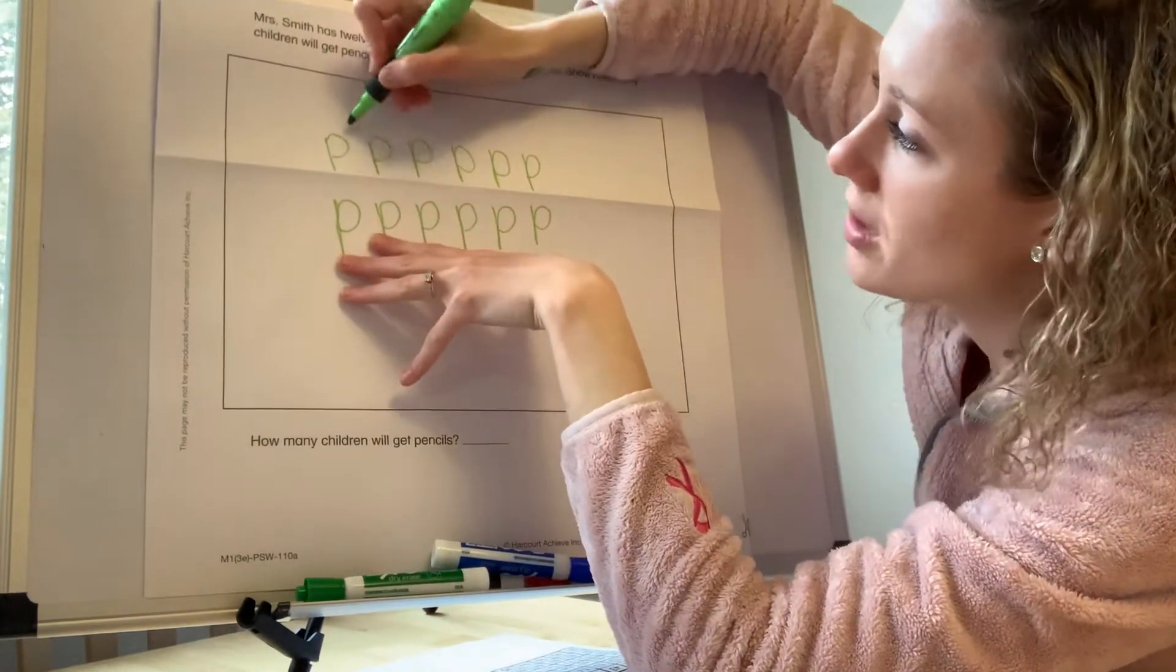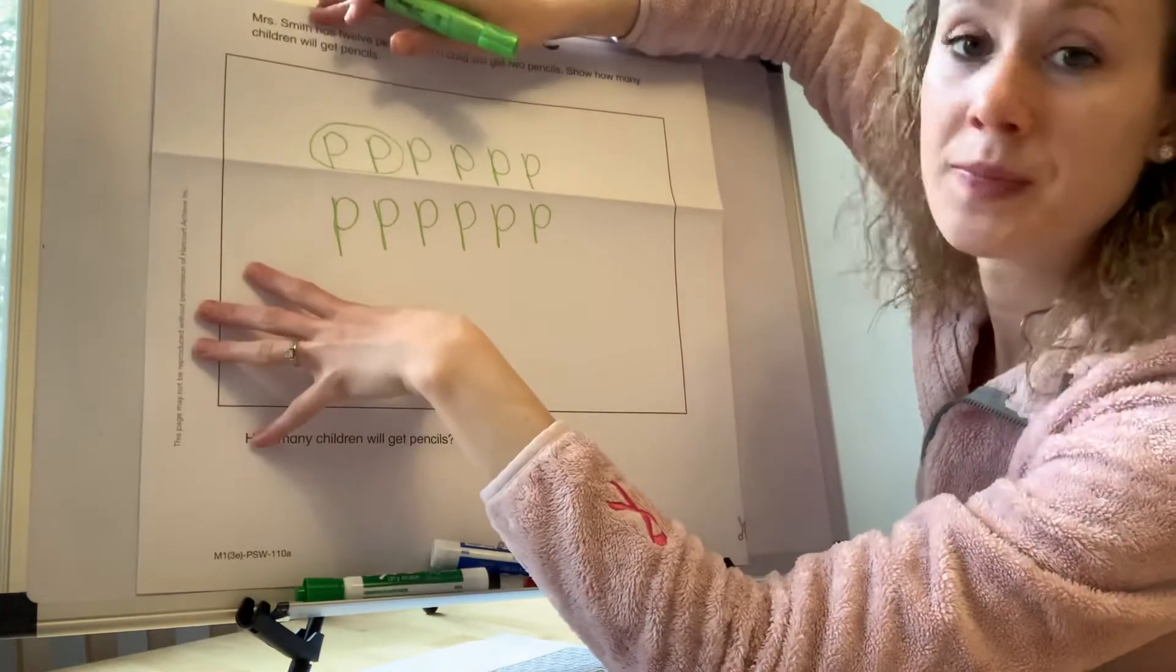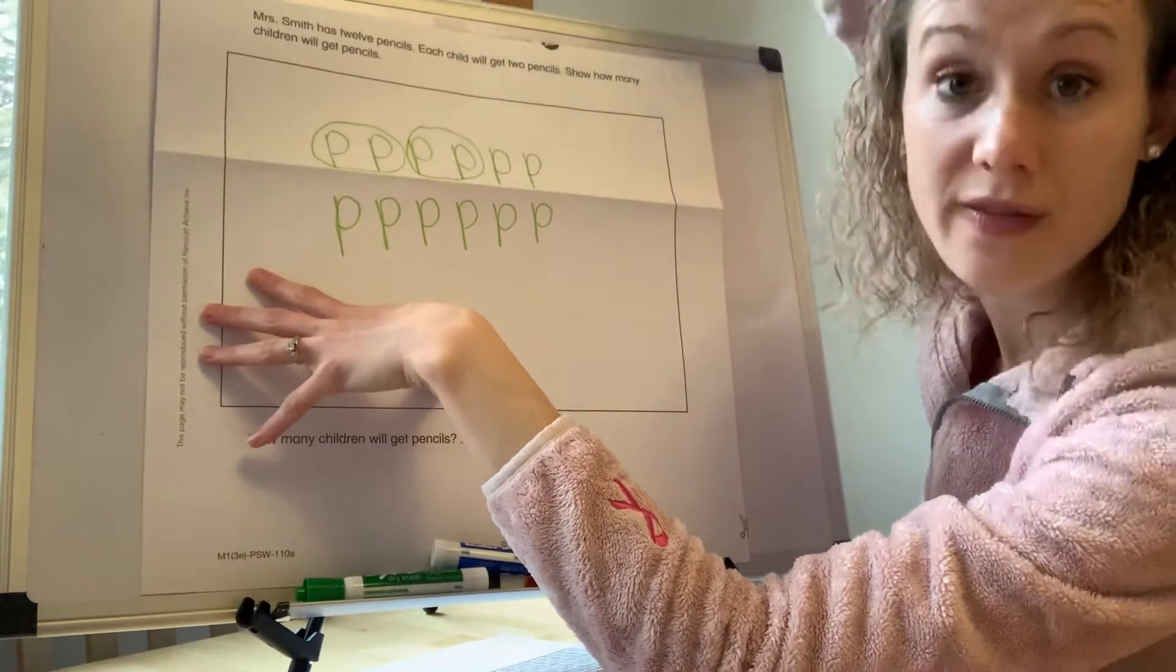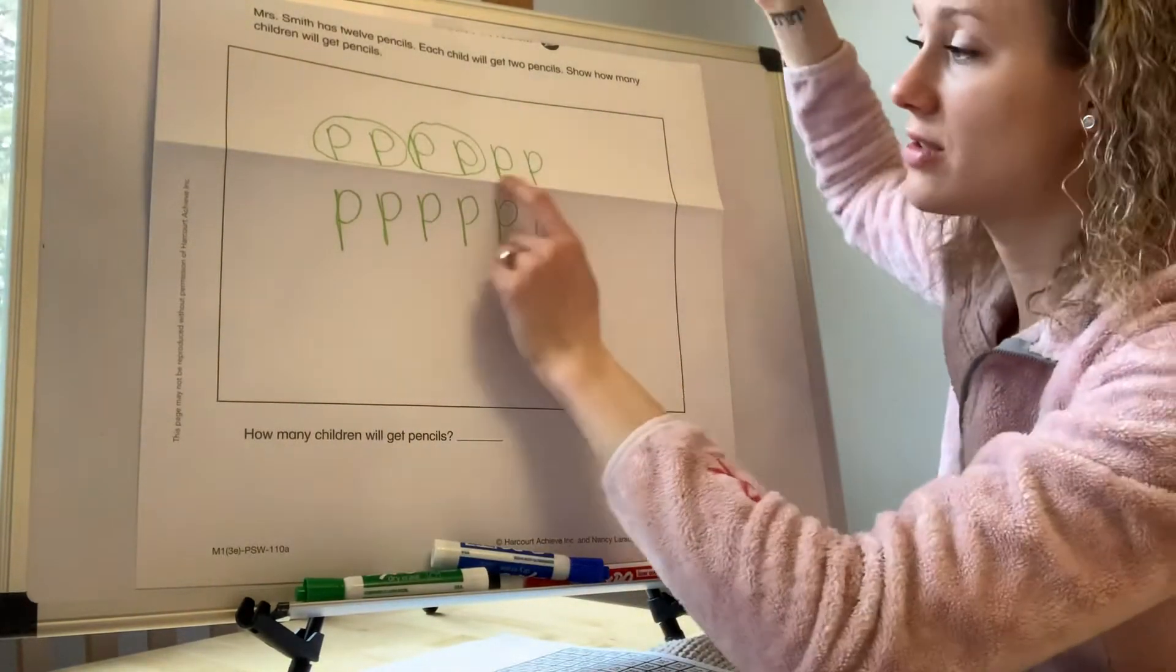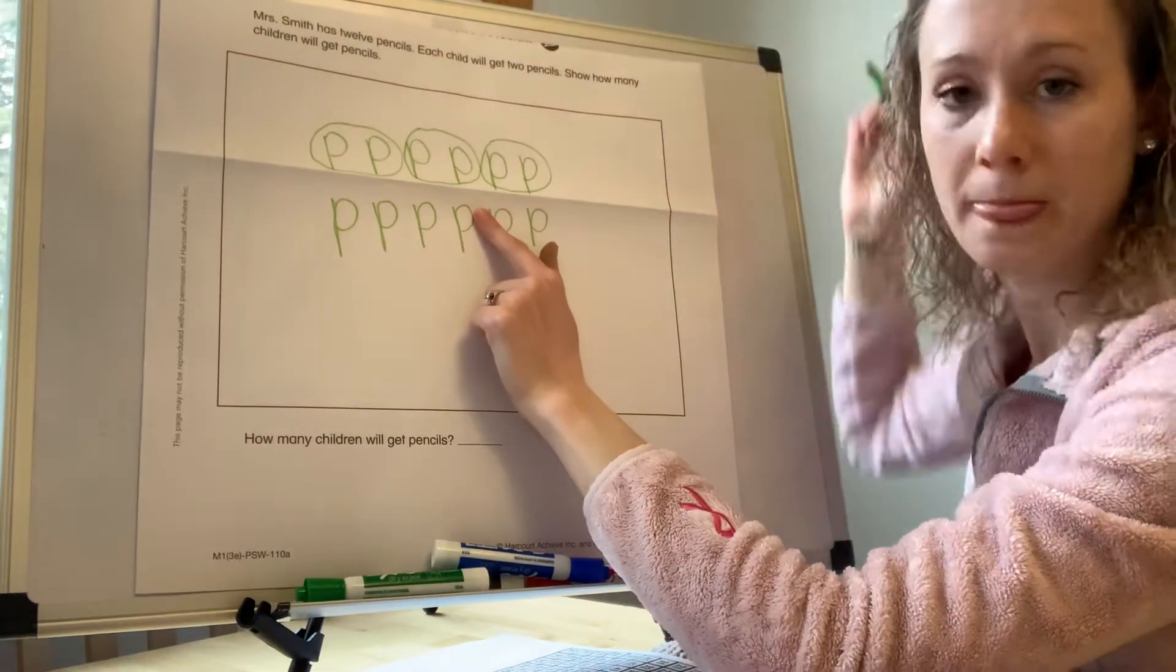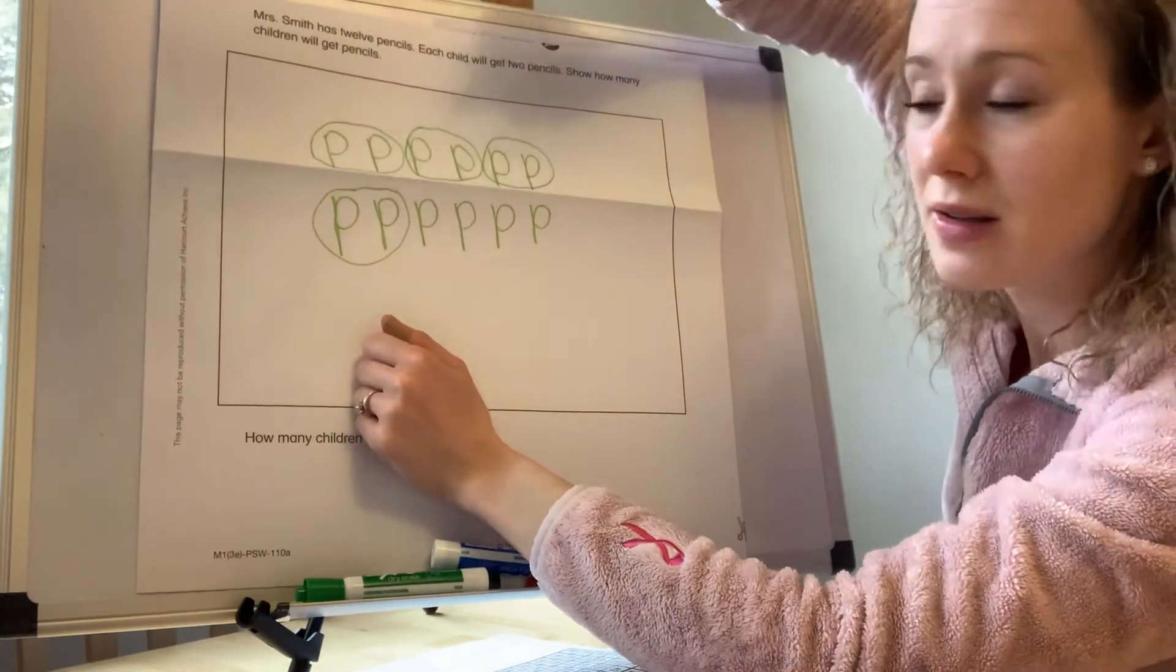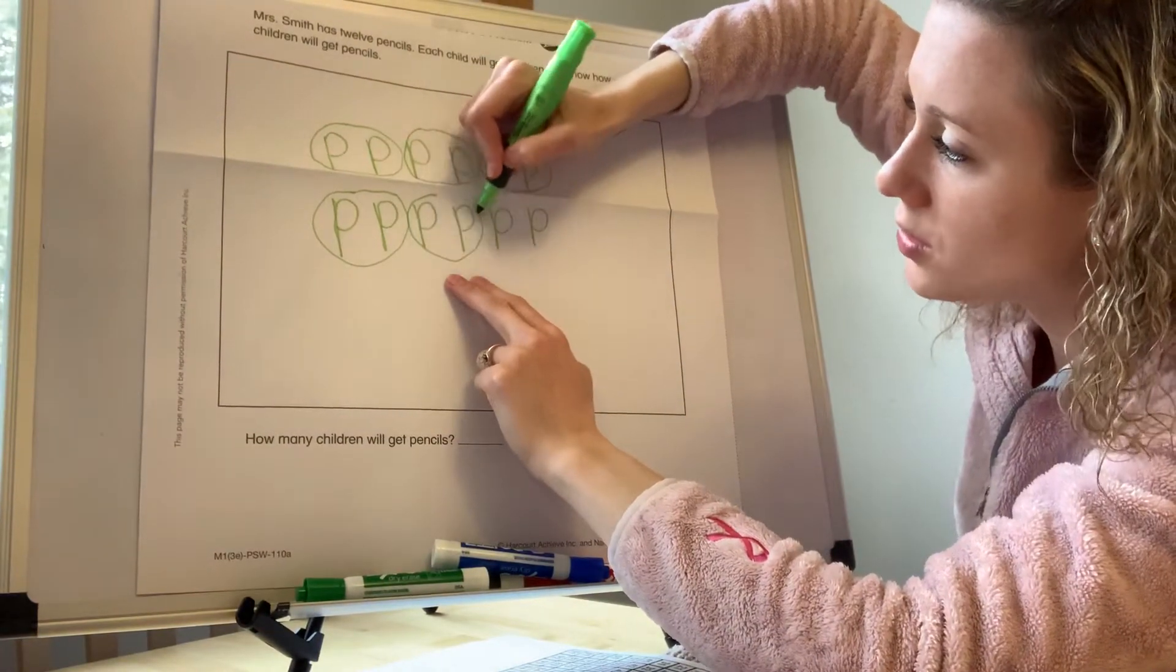Okay. So here we go. So 1 child gets these 2 pencils. Okay. Now I'm going to see these next 2 pencils. I need to circle those because those go to a different child. Just like each of you had 2 pencils in your pencil boxes at school. That's what's happening here. So now the next 2 pencils go to a different child. Okay. Now we're going to go down here. These 2 pencils go to another child. And these 2 pencils will go to a child.